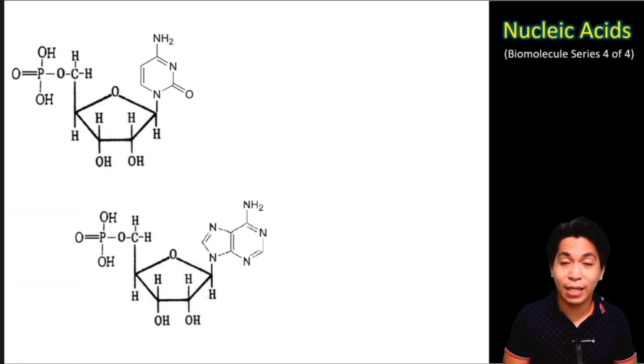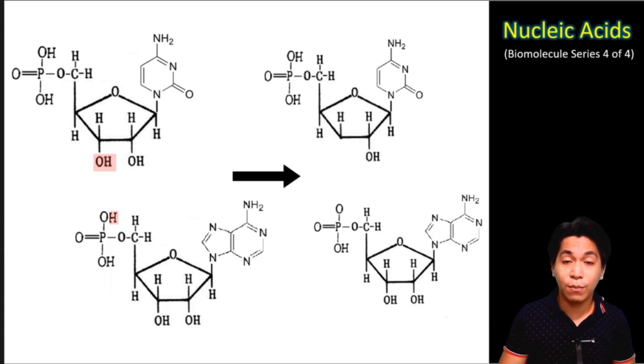The process of combining nucleotides is again similar to the previous biomolecules which is via condensation reaction, the removal of water. Now the question is, where will the water come from? One of the hydroxyl from the pentose sugar of one of the nucleotide will be removed while the hydrogen will come from the phosphate group from the other nucleotide. After we remove those two substances in their respective molecules, water will be expelled.